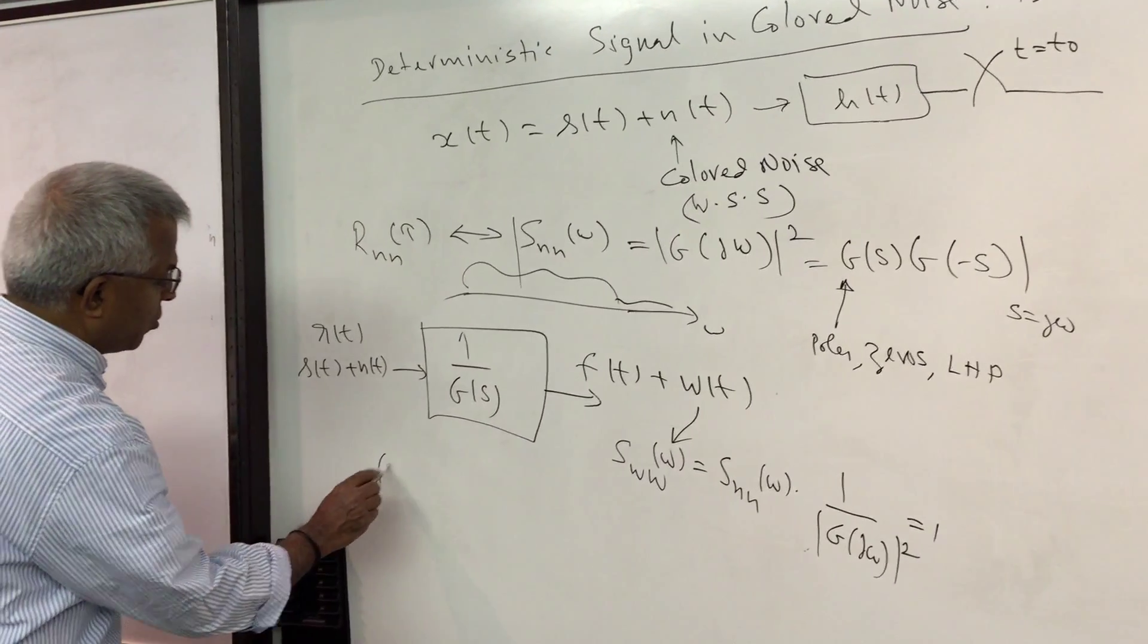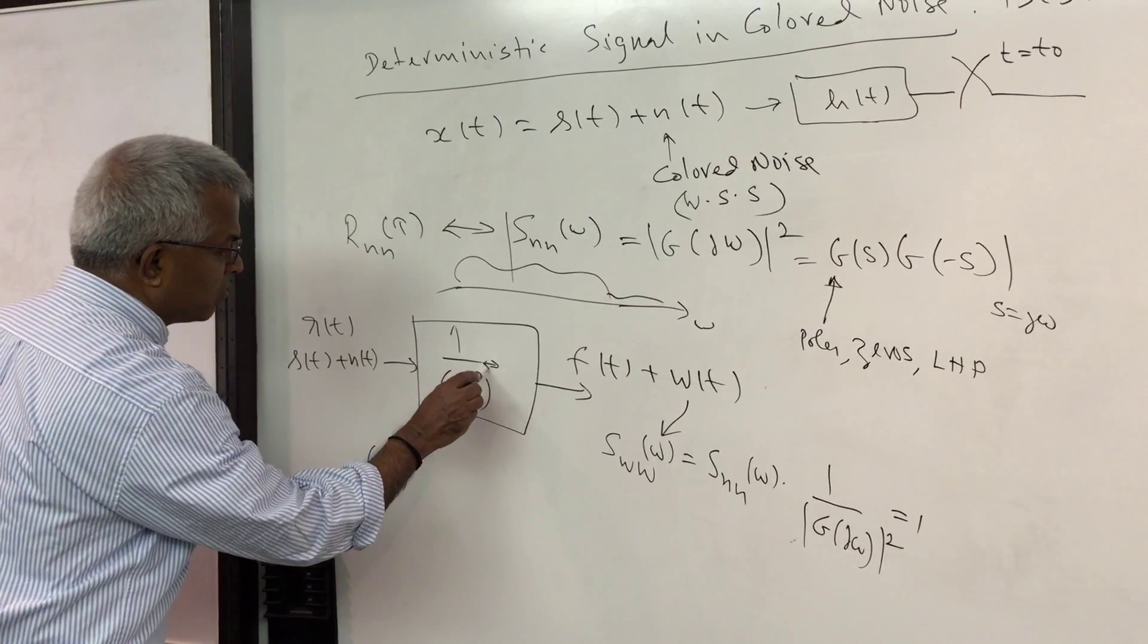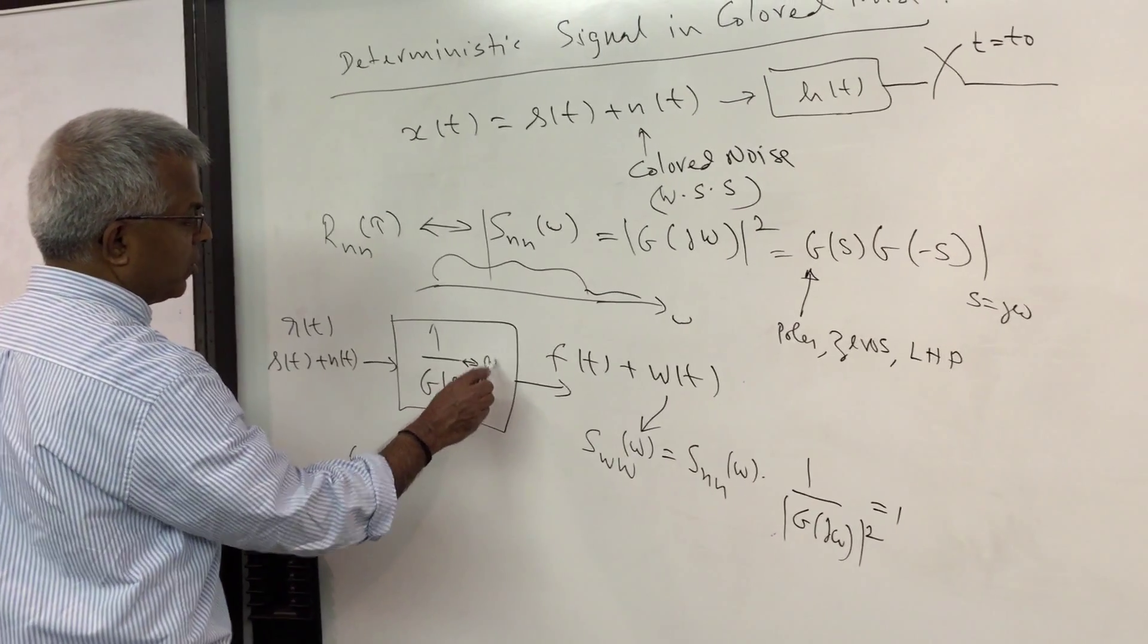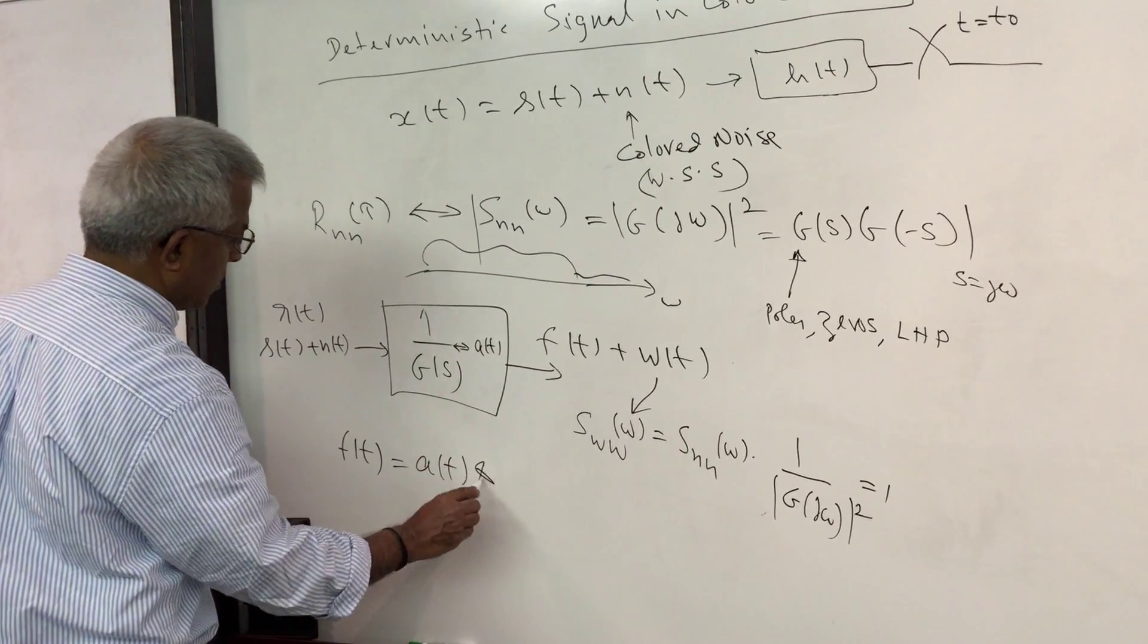So of course f(t) is going to be whatever is this filter, let me call its inverse transform to be a(t). So that's a(t) convolved with s(t).